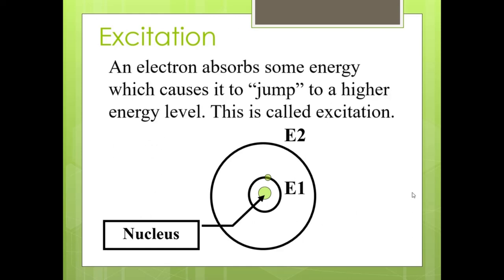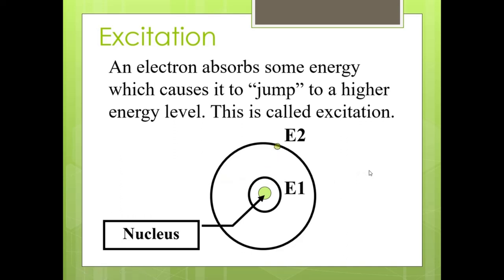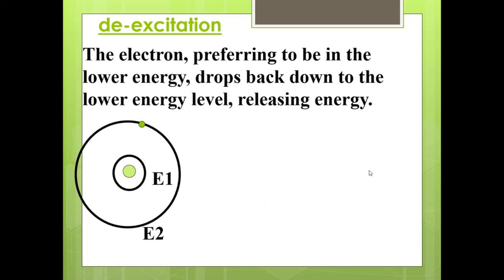The process that forms light is known as excitation. Some energy — usually in the form of light, electromagnetic waves, or electricity — comes into contact with the atom and is absorbed by an electron at a lower energy level. That electron then moves up to a higher energy level: excitation. Nature prefers lower energy levels, so the electron then falls back down and releases energy in the form of an electromagnetic wave.